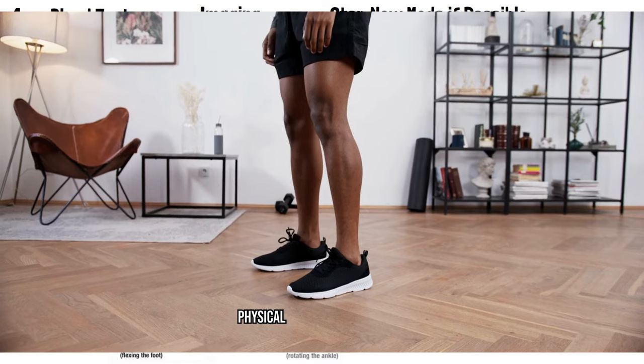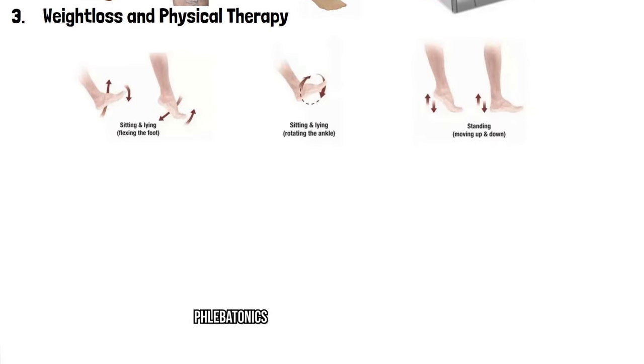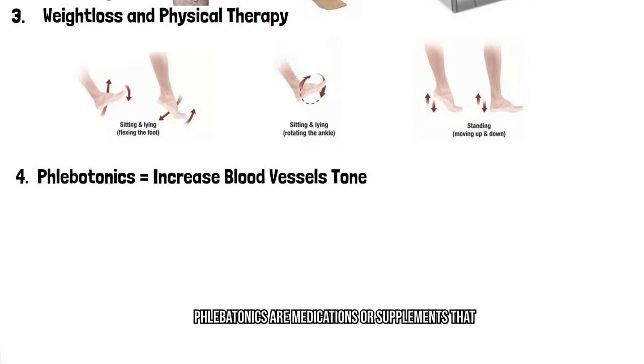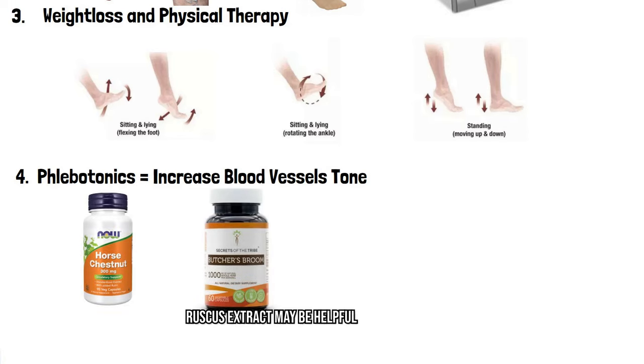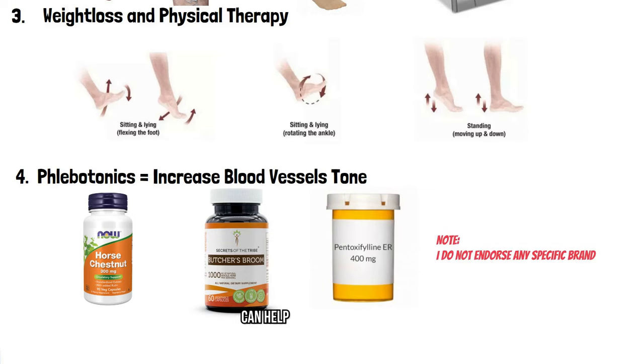Weight loss is key. Physical therapy can help as well. Phlebotonics are medications or supplements that increase the tone of your blood vessels so that we can pump blood throughout the circulation as well. There's some evidence to say horse chestnut seeds, ruscus extract, may be helpful in reducing the edema. There are medications like pentoxifylline that can help as well.